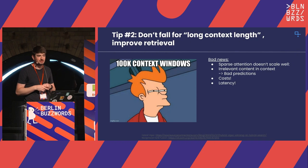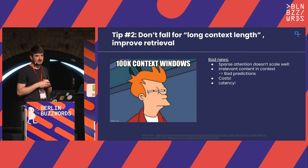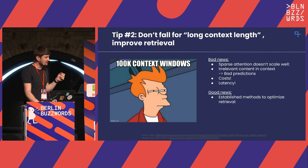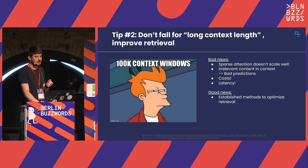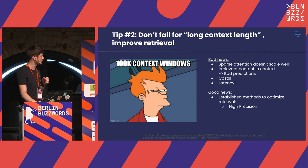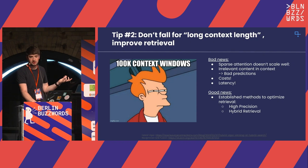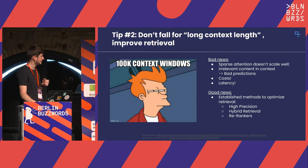The good news: retrieval has a lot of established methods you can use to optimize and make small context windows work. I'd recommend going for high precision — if you optimize your retrieval pipeline, look into hybrid retrieval combining BM25 with vector-based search, which we saw a couple of times at this conference.